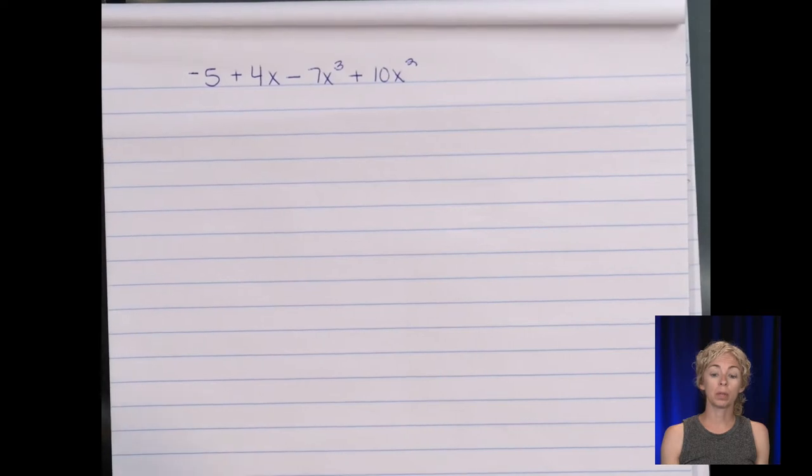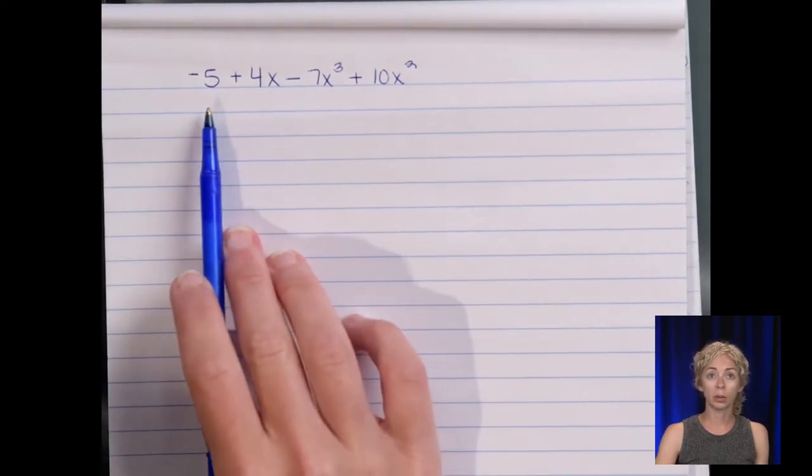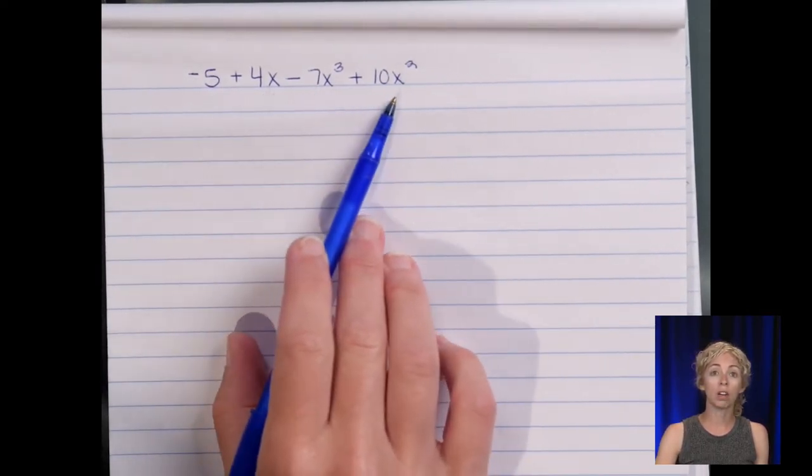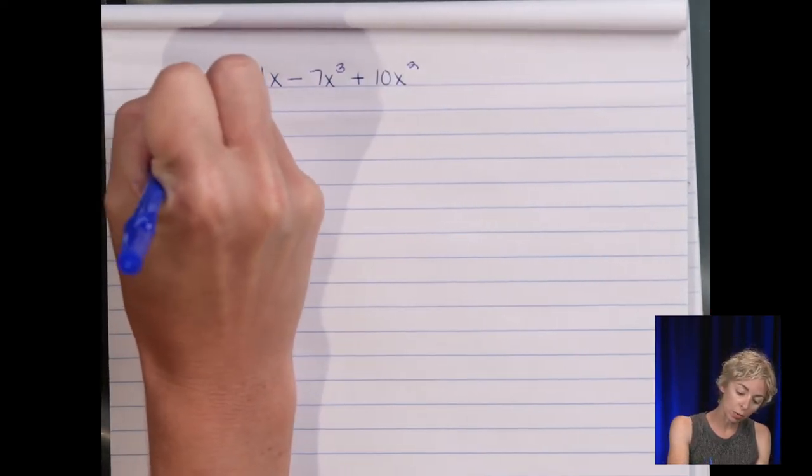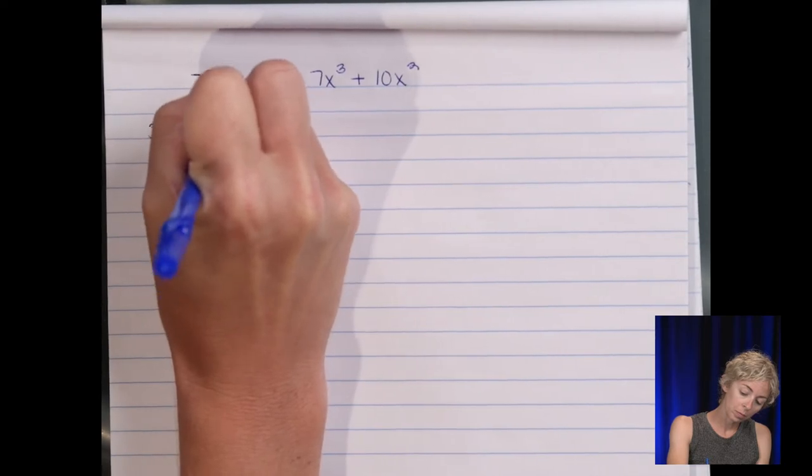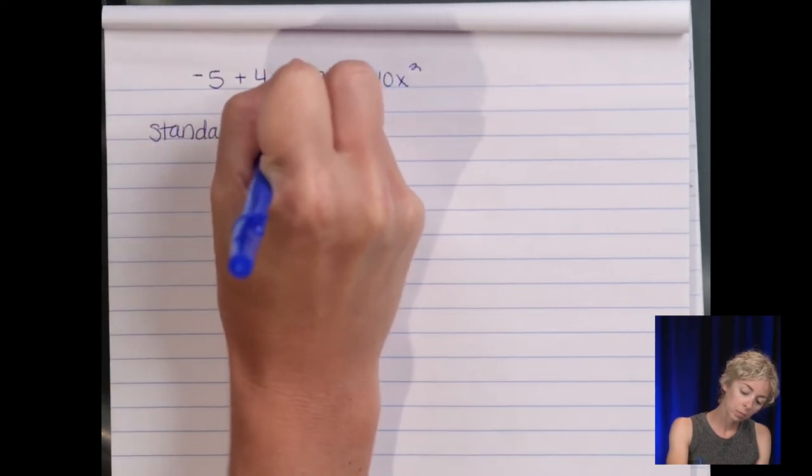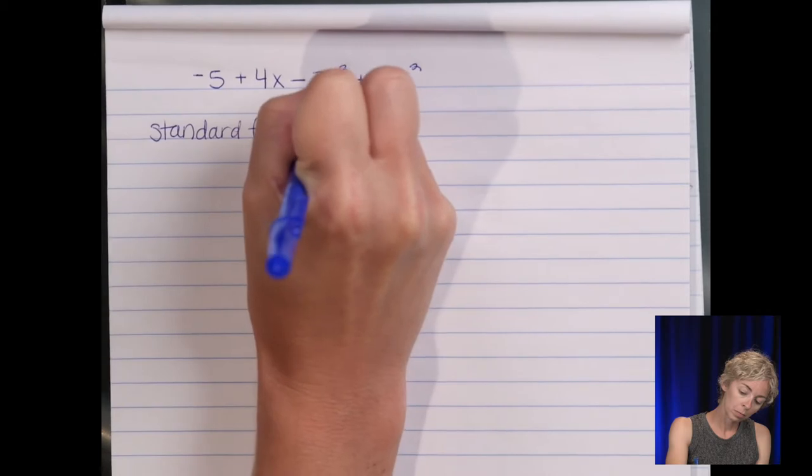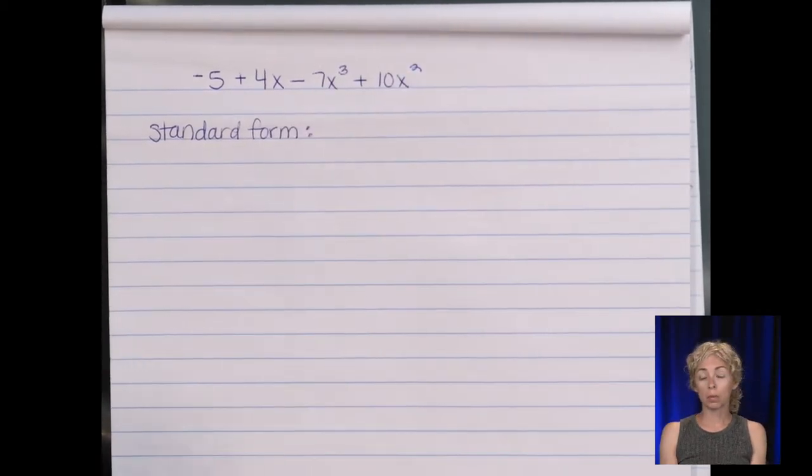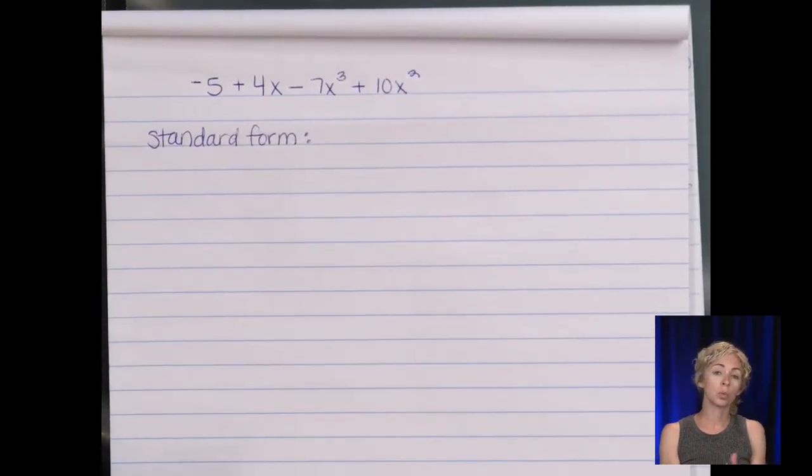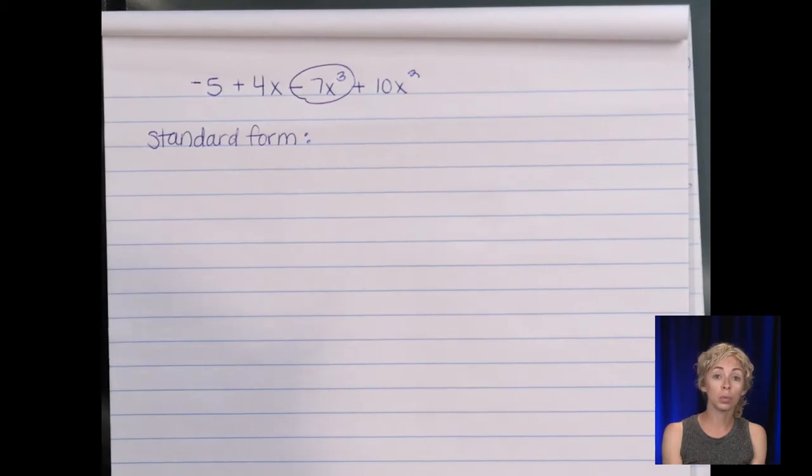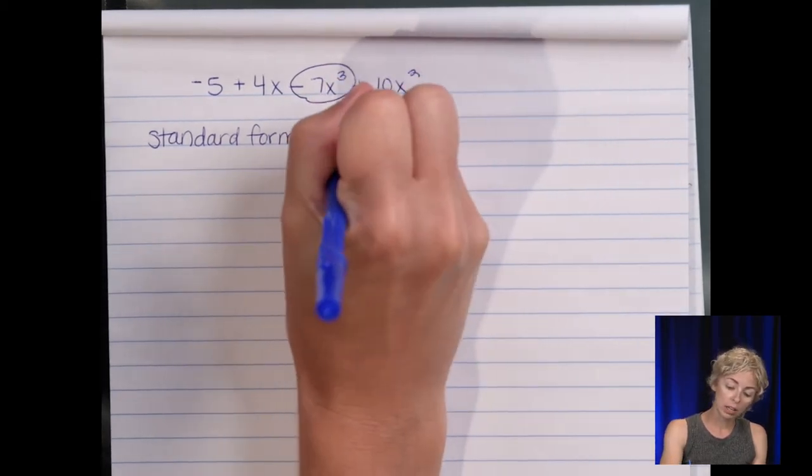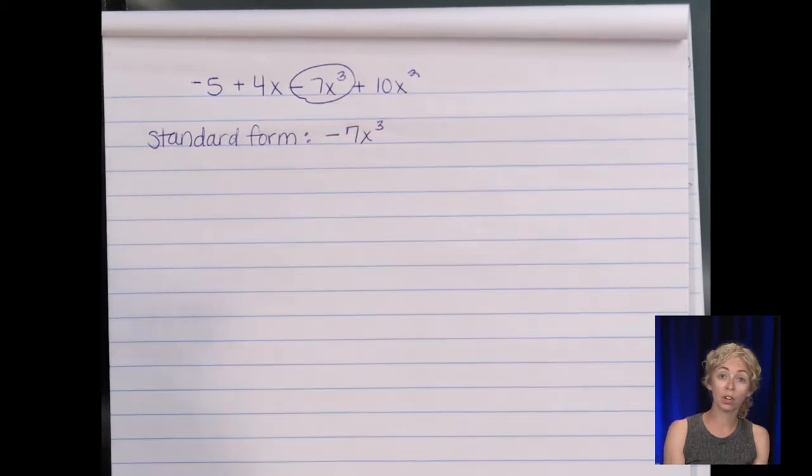So I have this polynomial right here. It has one, two, three, four terms. And I want to put this polynomial in standard form. So standard form means I rewrite these four terms from highest to lowest exponent. So my highest exponent is this to the third or cubed power. So that negative seven x to the third is going to be written first.